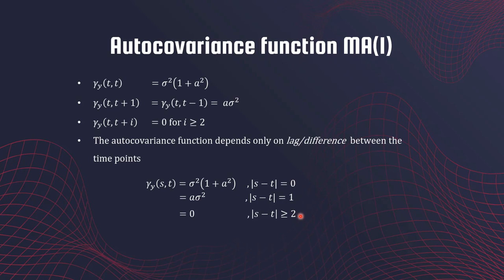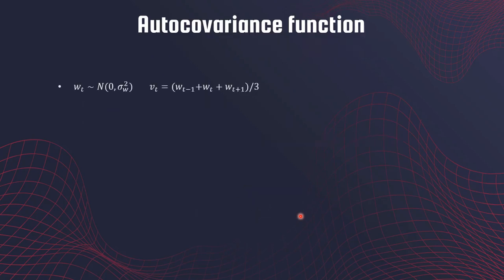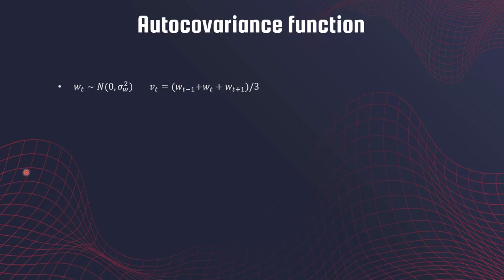Let's look at another example to get better practice with these calculations. Here W_t has a normal distribution but it could be white noise as well — you could easily write it as WN(0, sigma²_w). This v_t process is the average of the current white noise, the past term, and one term in the future.